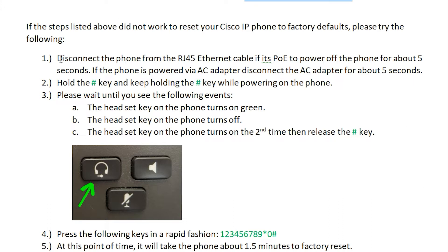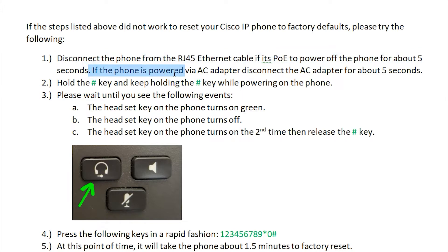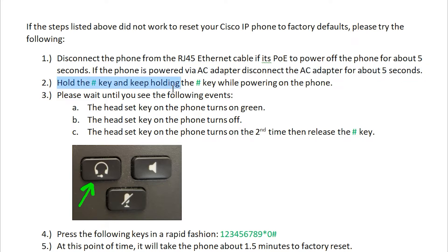We're going to start off again by disconnecting the RJ45 cable from the phone if it's PoE-powered and wait about five seconds. If the phone is powered via AC adapter, we're going to disconnect the AC adapter for about five seconds. Then we'll hold down the hash key and keep holding it down while we power on the phone.